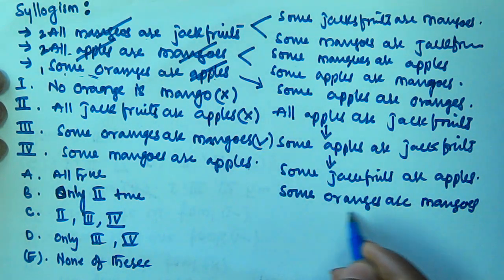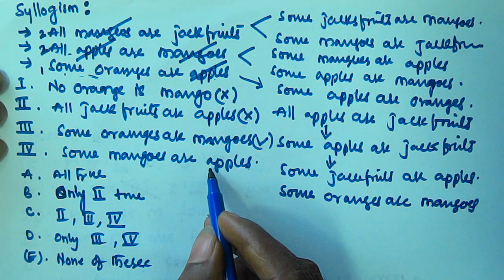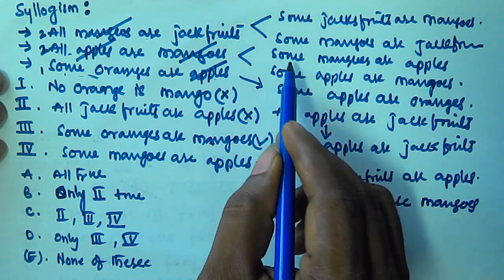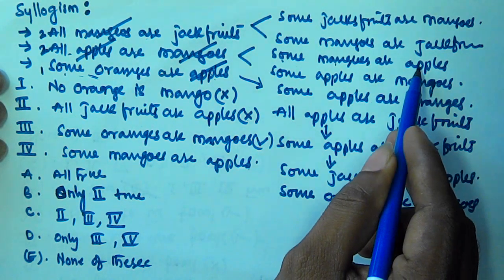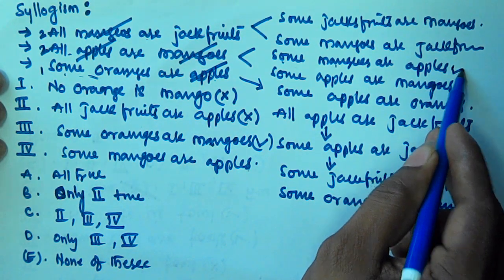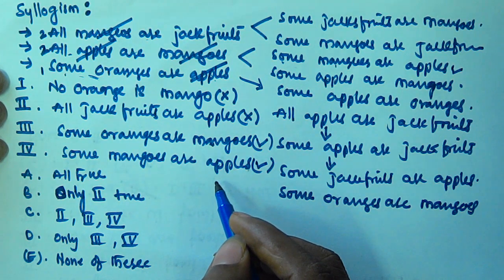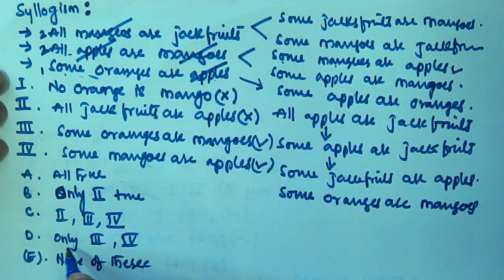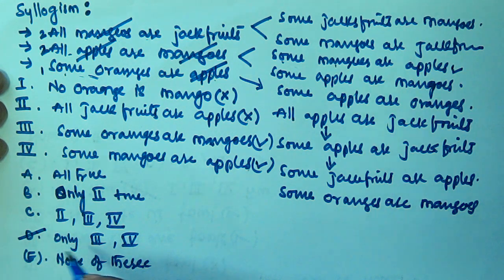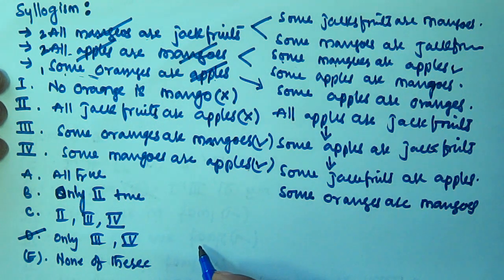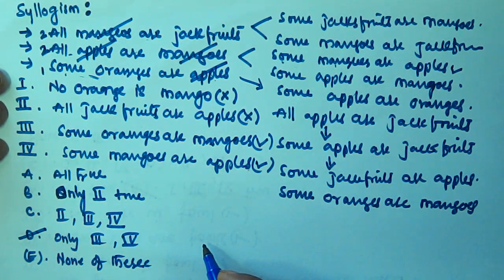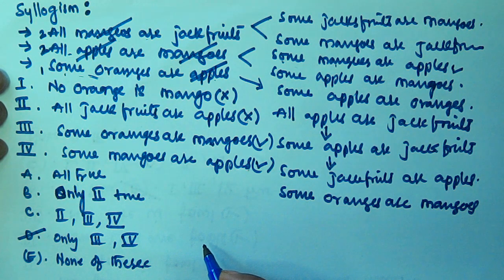The fourth conclusion is some mangoes are apples, which we already derived. So the fourth one is also true. That means only the third and fourth conclusions are true, which corresponds to option D. So we have to select option D. I hope you got this. If you have any doubt, please leave a comment. Thank you very much for watching and please subscribe to my channel.